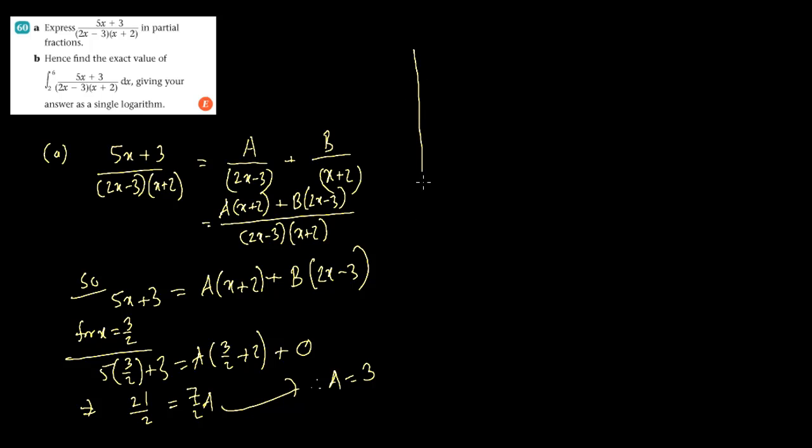Next, we have to find the value of B. So here, we will take this thing as 0. So for x equals to -2, if you put this on the left hand side, 5(-2)+3 equals to... Now this -2+2 would be 0, so this is 0, plus B. So if you put -2 here, 2(-2) is -4, minus 3.